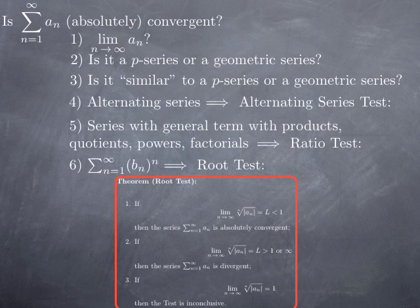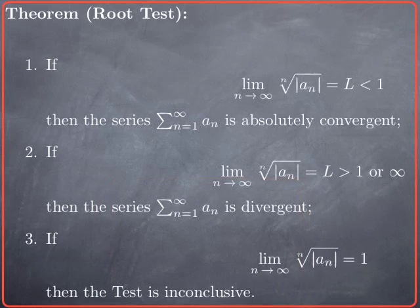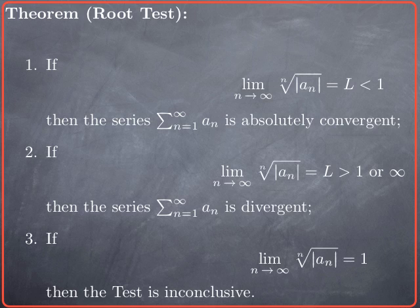We also have the root test, which applies typically to series where the general term is an nth power of another expression. It is similar in structure to the ratio test: instead of the ratio of consecutive terms, you look at the nth root of |a_n| and take the limit as n → ∞. If that limit is strictly less than 1, the series is absolutely convergent; if it is strictly greater than 1 or goes to infinity, the series is divergent; if the limit does not exist or equals 1, you cannot conclude anything and must use another tool.